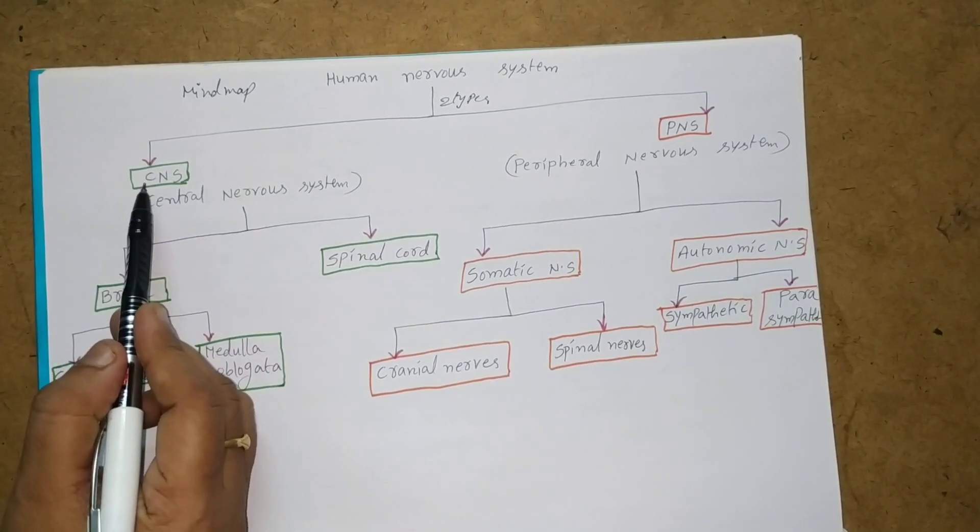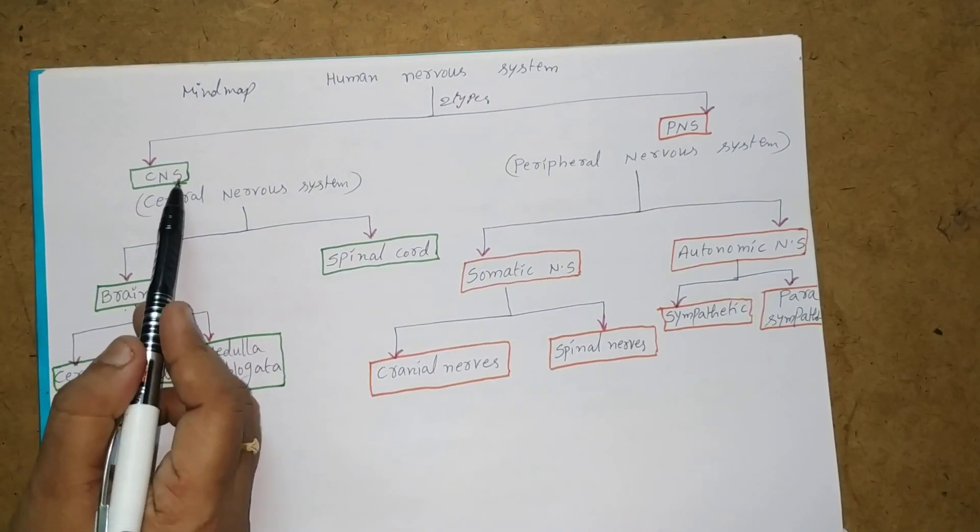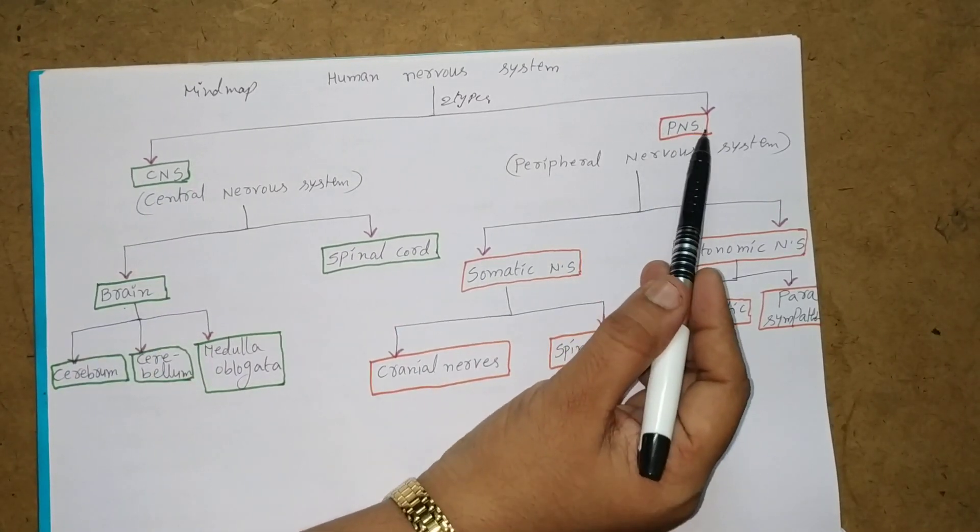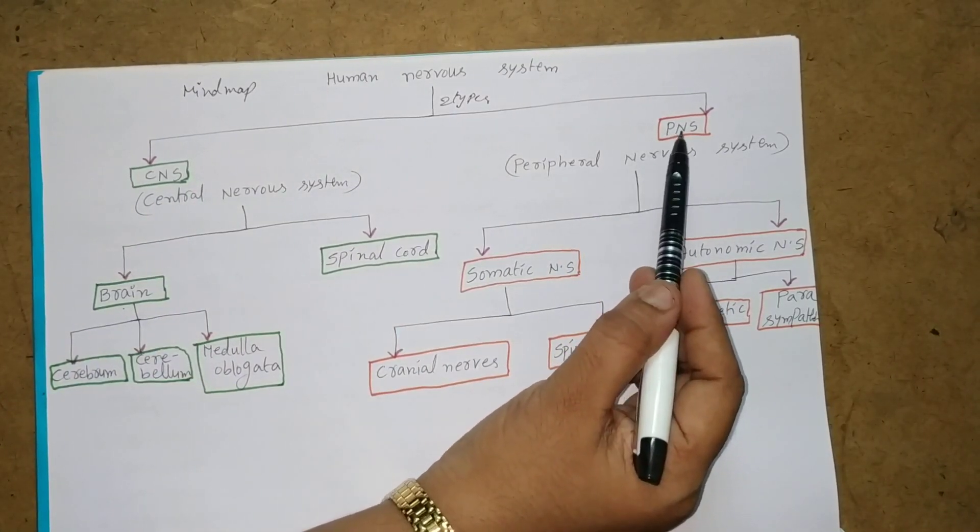First one is CNS, CNS means Central Nervous System. Second one is PNS, PNS means Peripheral Nervous System.